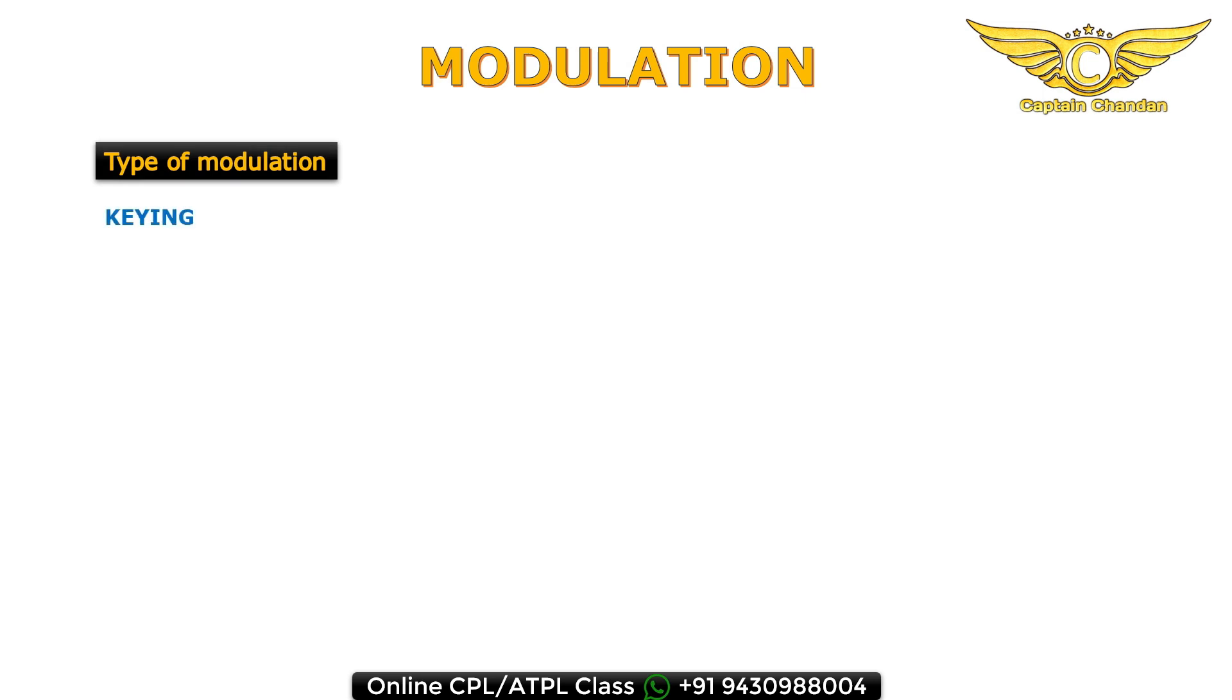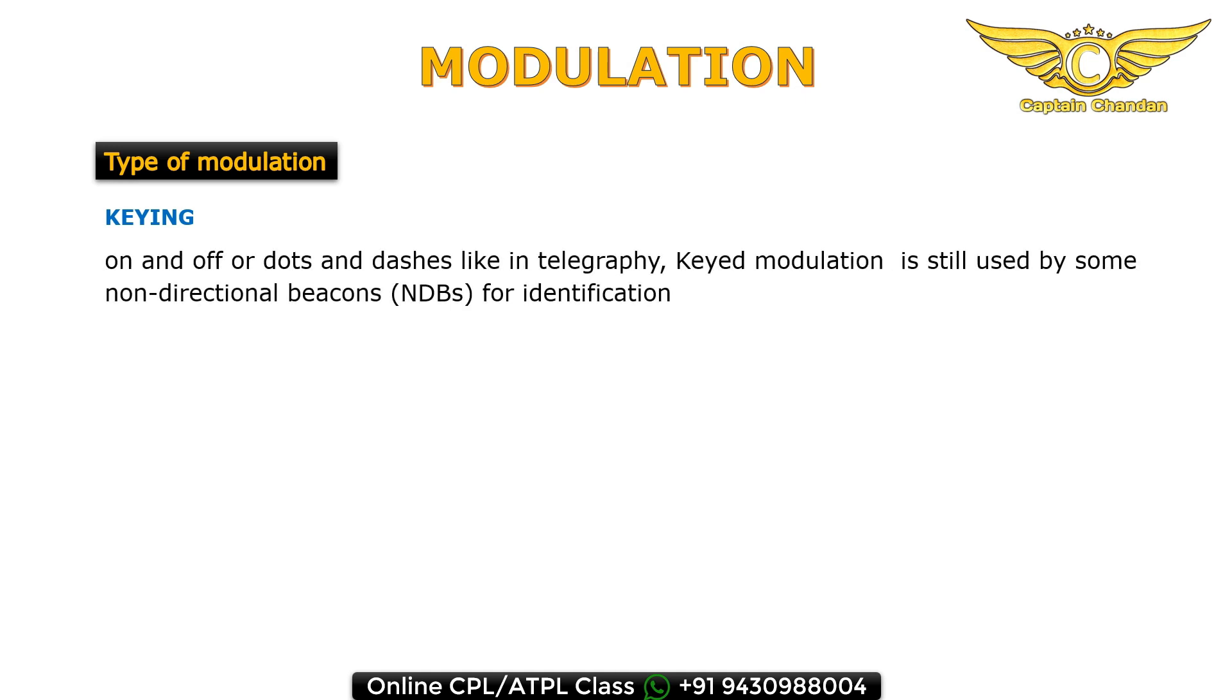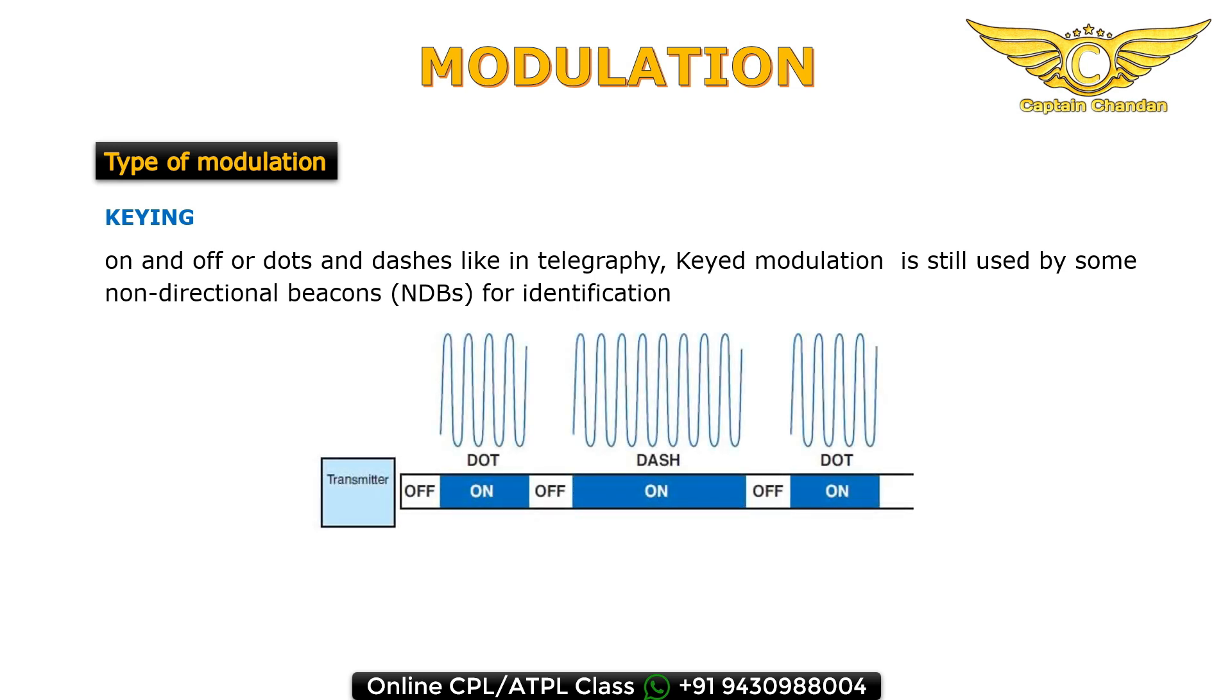There are five types of modulation. The first one is keying. On and off or dots and dashes like in telegraphy, keyed modulation is still used by some non-directional beacons, NDB, for identification purposes. In simple terms, adding information by switching electrical current on and off, like Morse code.